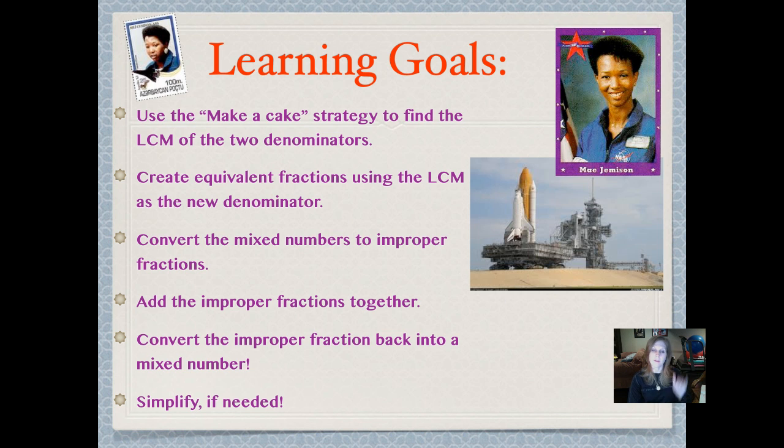You're going to follow these steps exactly when you are using this strategy. So the first thing you're going to do is to use the make-a-cake strategy to find the LCM of the two different denominators. Then you're going to create equivalent fractions using your LCM, or your new common denominator, as the new denominator.